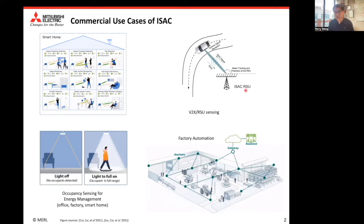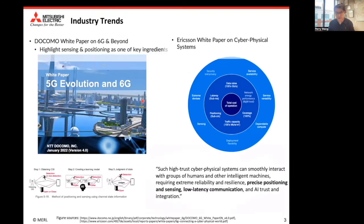Another application is the ISAC roadside unit. This roadside unit can turn communication and sensing signals into a service with much higher resolution sensing results and larger field-of-view coverage compared to a standalone car, and potentially share those results through high-reliability, low-latency communication links to support autonomous driving tasks. In industry, companies like Docomo and Ericsson have already highlighted sensing and positioning in their strategies for 6G or beyond 6G.